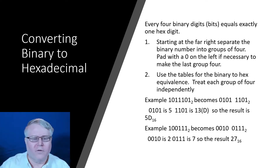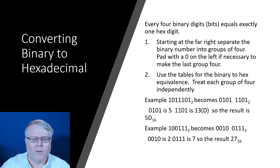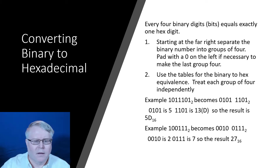You could convert binary to hexadecimal by converting binary to base 10 and then back out to hex, but there's a much faster technique. Since 16 is 2 to the fourth power, every four binary digits equals one hexadecimal place. Starting at the far right, group the bits by four. If the number of bits is not divisible by four, the last group will need to be padded with zeros on the far left. Then look up the bit pattern for each group of four binary digits and write their hex equivalent.